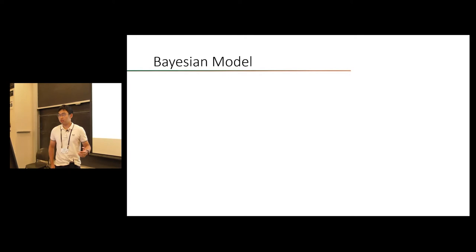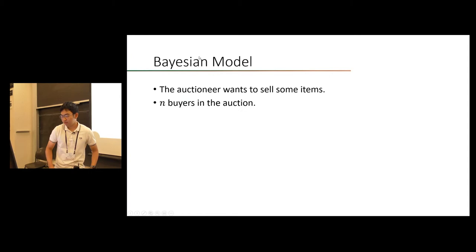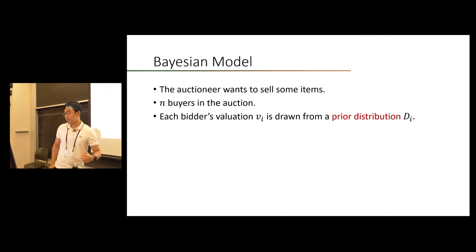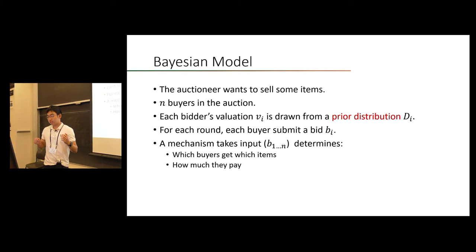Today I'm going to be talking about some cool stuff about the complexity of multidimensional Bayesian mechanisms. So let's start with the model. We are considering the very standard Bayesian model. There is an auctioneer who wants to sell some items, and there are n buyers in the auction. Each bidder's value vi is drawn from a prior distribution di, and for each run, each buyer submits a bid bi. Then a mechanism takes input b1 to bn and determines which buyers get which items and how much they pay.